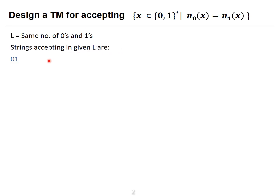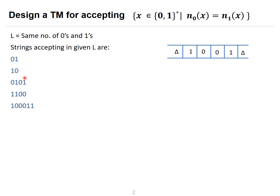Let us see some examples. The string '01' has one zero and one one - same number. Similarly '10' also has the same number of zeros and ones. The string '0101' also has the same number. Another string '1100' has two ones and two zeros. Another string also has three ones and three zeros.